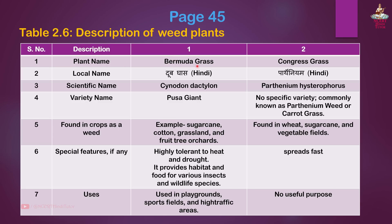Page 45, Table 2.6: Description of weed plants. First: Bermuda grass. Local name: Doob grass in Hindi. Scientific name: Cynodon dactylon. Found in crops as a weed — sugarcane, cotton, grassland and fruit tree orchards. Special features: Highly tolerant to heat and drought; provides habitat and food for various insects and wildlife. Uses: Used in playgrounds, sports fields and high-traffic areas.